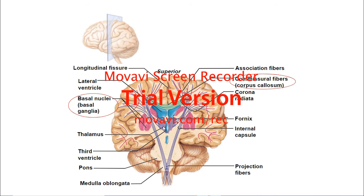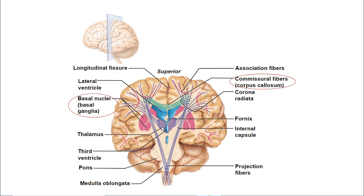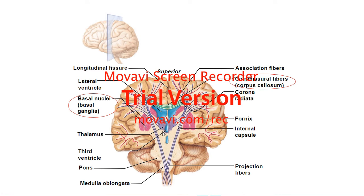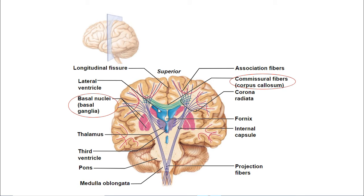You can also see the thalamus, which we'll talk about more when we discuss the diencephalon. A ventricle is just a space — the third ventricle is just a space where cerebrospinal fluid is going to be flowing. You also see the lateral ventricle, which is another space where cerebrospinal fluid flows.